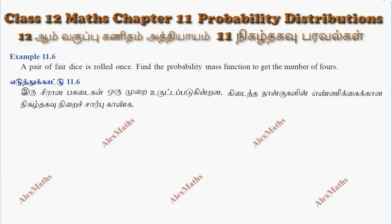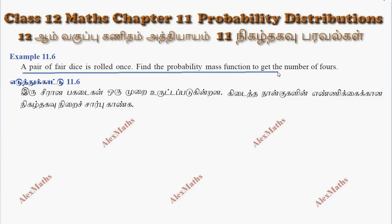Hi students, this is Alex here. Example 11.6: A pair of fair dice is rolled. Find the probability mass function to get the number of 4s.